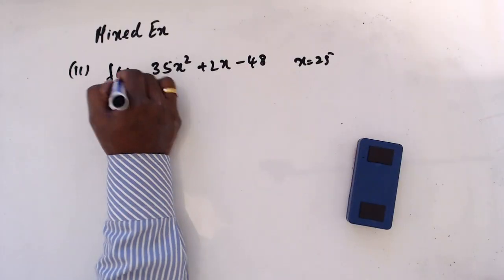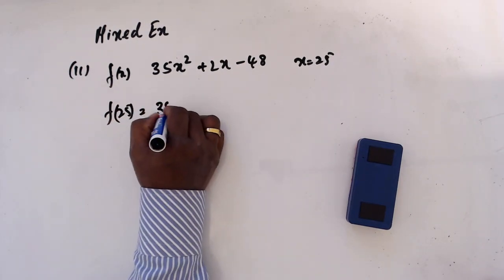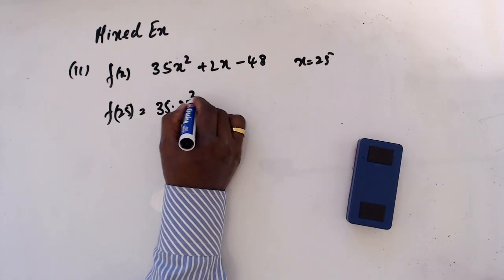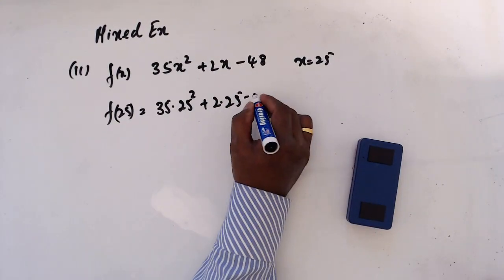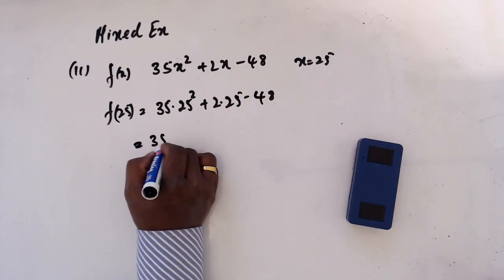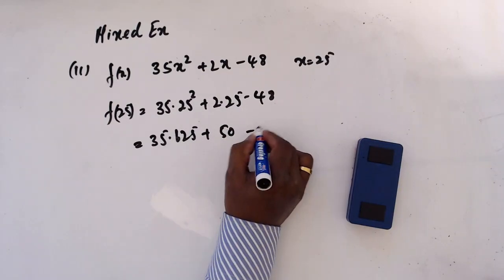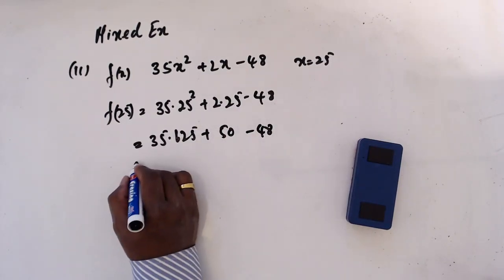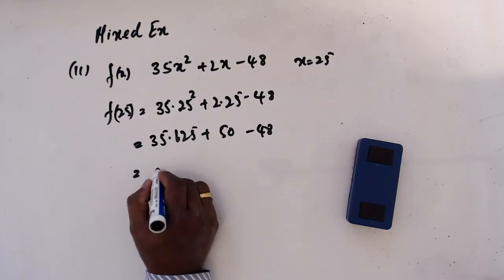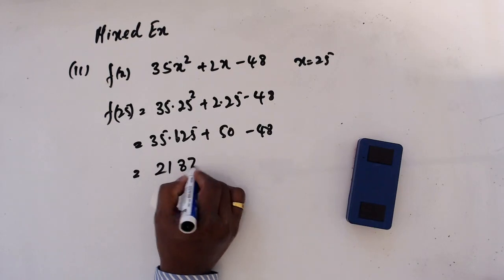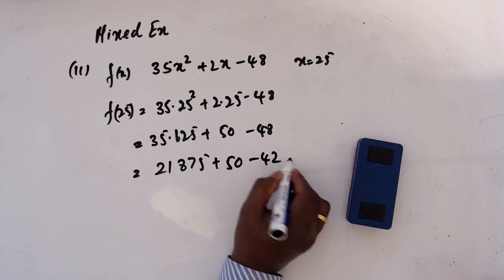I'll take this as f(x), so we want to find f(25): 35 times 25 squared plus 2 times 25 minus 48. That gives 35 times 625 plus 50 minus 48, which is 21,875 plus 50 minus 48.